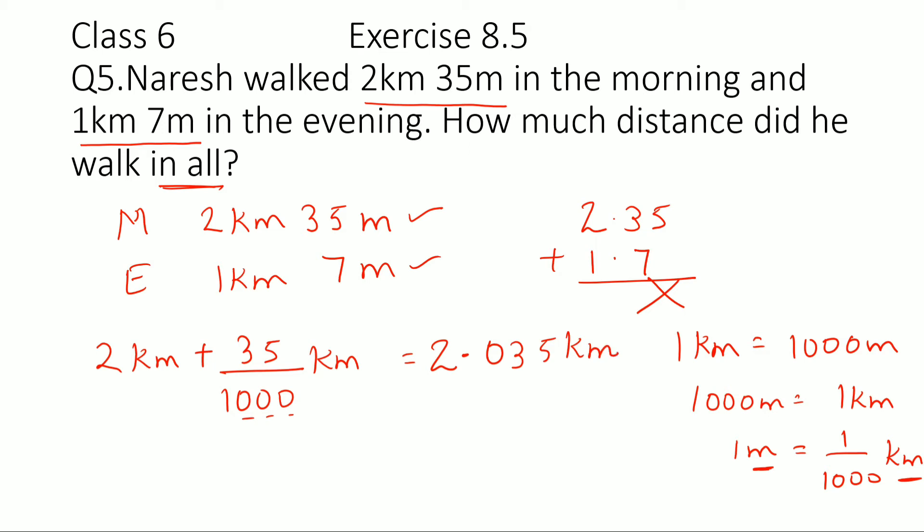Right, and the second one is 1 kilometer plus 7 by 1000 kilometer. We are converting this 7 meter to kilometer, so dividing by 1000. So this would be equal to 1.007 kilometer. Okay, this we have already done in exercise 8.4, so you should know this. And then now that it is in kilometer, we just need to add it up.